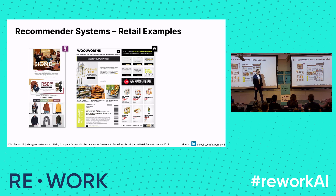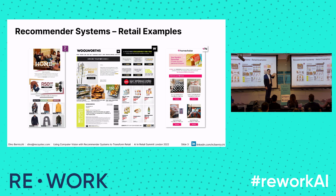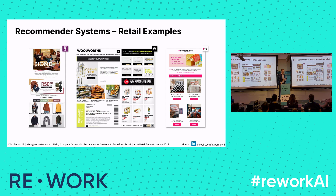Here are examples of three different companies that have done traditional recommender systems — all based on what other customers like the target customer like. One uses a reinforcement learning approach to find which vouchers to give customers; another is an FMCG food retailer doing demand forecasting and cyclical forecasting. All these models are quite dependent on historic data, which limits what you can do.